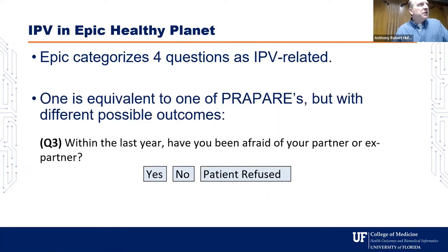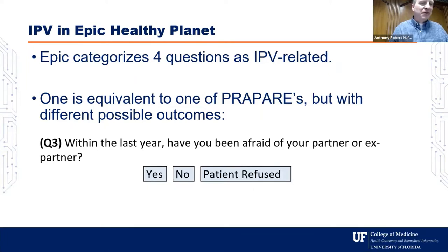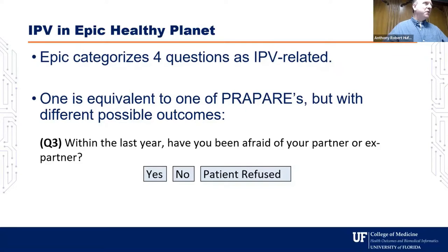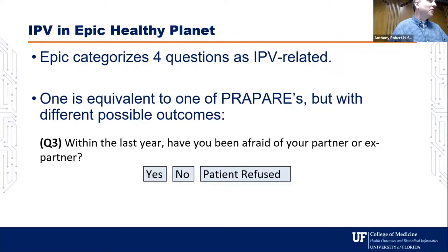In Healthy Planet, there are four items under the heading of intimate partner violence. One is pretty much equivalent to PREPARE, but the response set is different: within the past year, have you been afraid of your partner or ex-partner? Yes, no, or patient refused. The reason it says patient refused is there are different modes in which you can ask these questions — a facilitated mode where the interviewer records responses in real time, or a self-entry mode where the patient enters their own answers themselves.